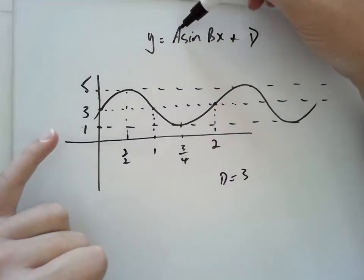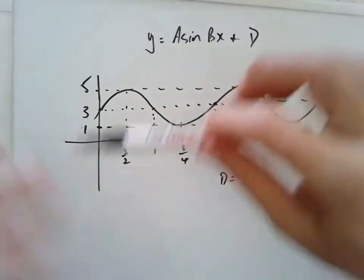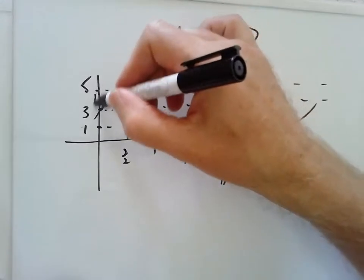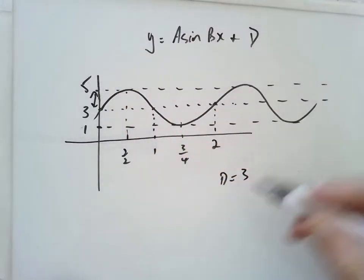a is the amplitude and the amplitude is the distance from the center of motion to the top and to the bottom. So a is that distance there, so we can see here that a is 2.